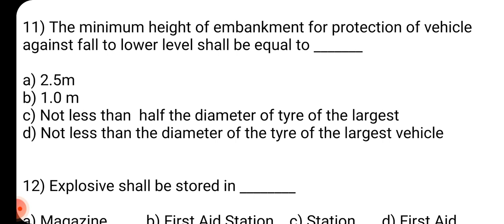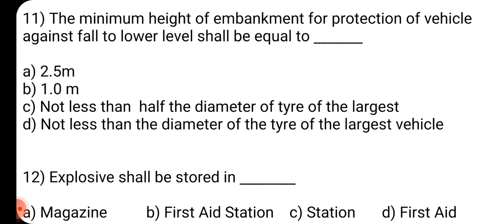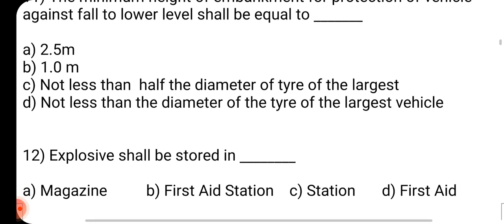Q11: The minimum height of embankment for protection of vehicle against fall to lower level shall be equal to dash. Answer is D: Not less than the diameter of the tire of the largest vehicle.